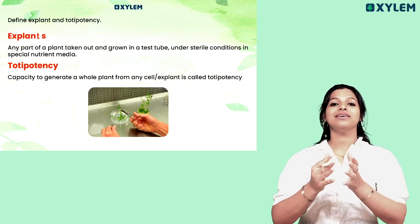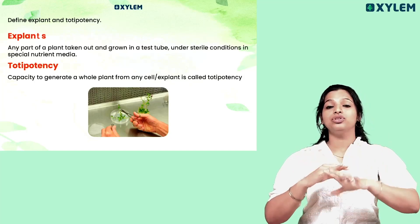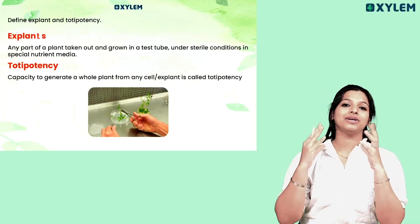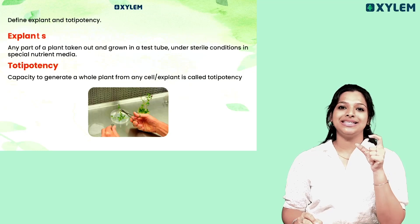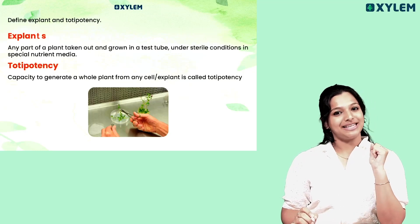If you look at a tree, you can see that an explant can be developed into a plant. So we call this capacity totipotency.